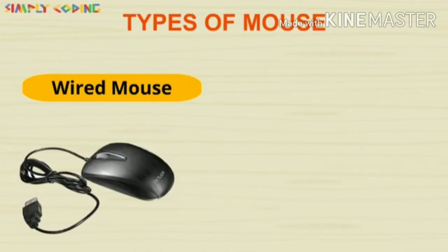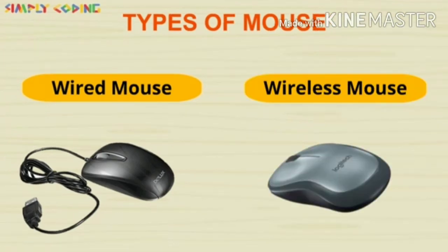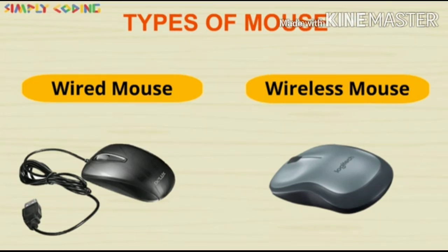So students, there are two types of mouse. The first one is a wired mouse, which connects to the CPU of the computer. The second is a wireless mouse — there are some mice which are wireless. Nowadays, computer mice are usually wireless and do not have a wire.